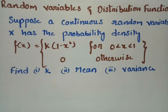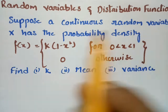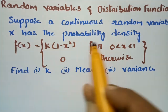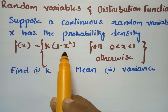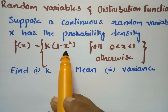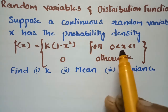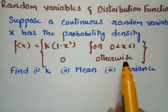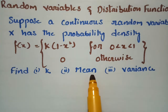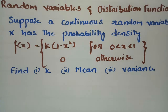This video is on the problem from random variables and distribution functions. Suppose a continuous random variable x has a probability density f(x) equal to k times (1 minus x squared) for 0 less than x less than 1, and 0 otherwise. We need to find the value of k, the mean, and the variance.